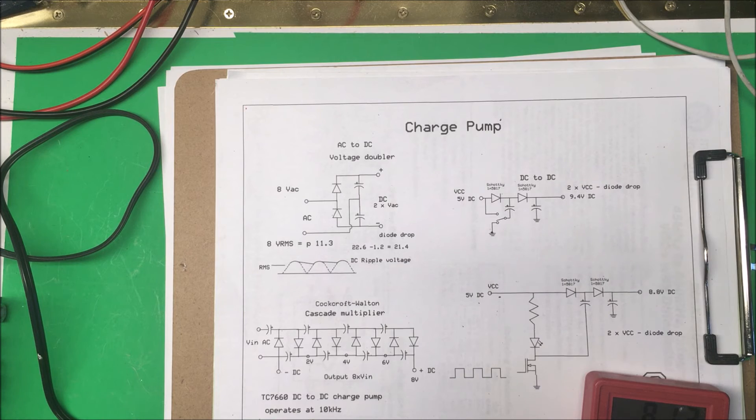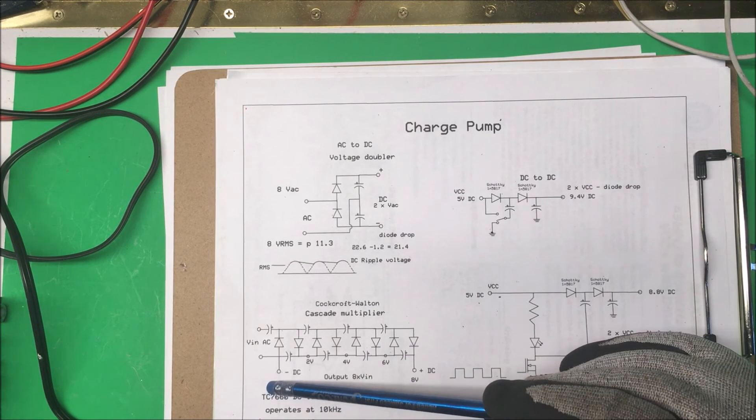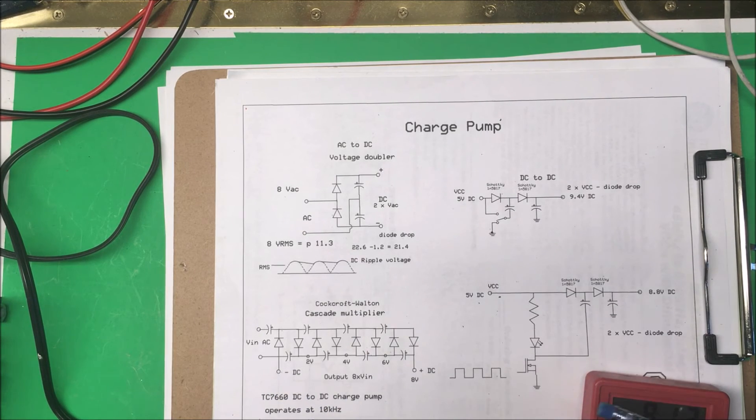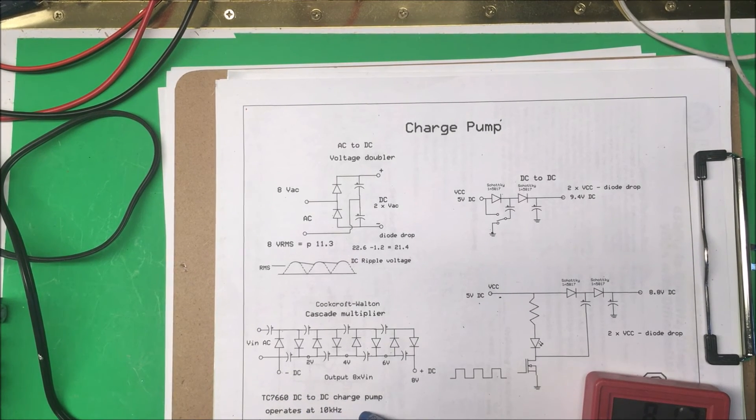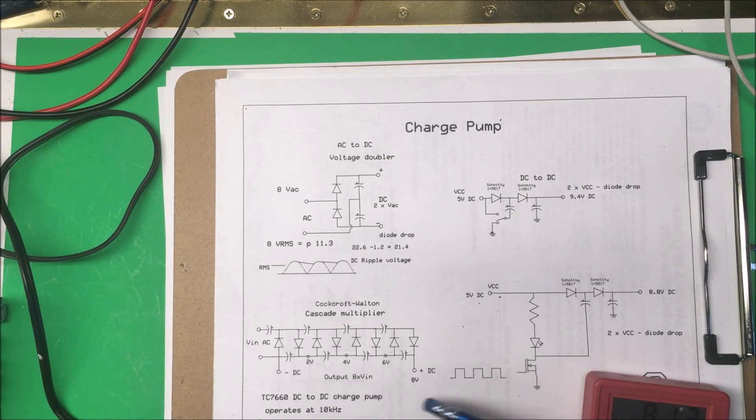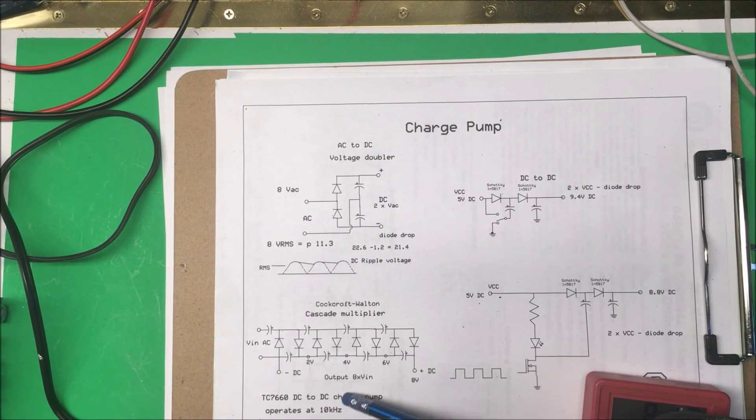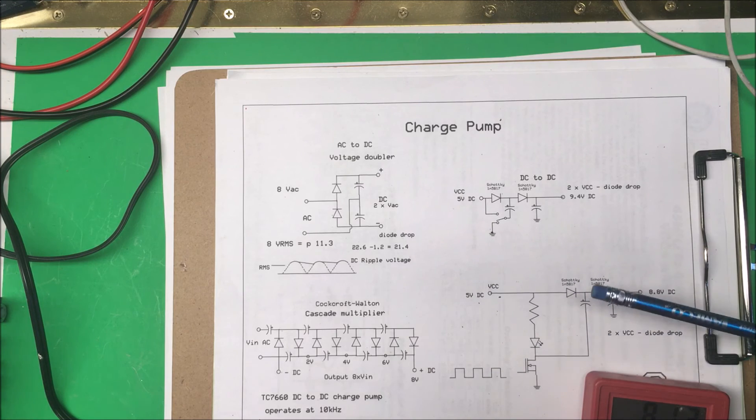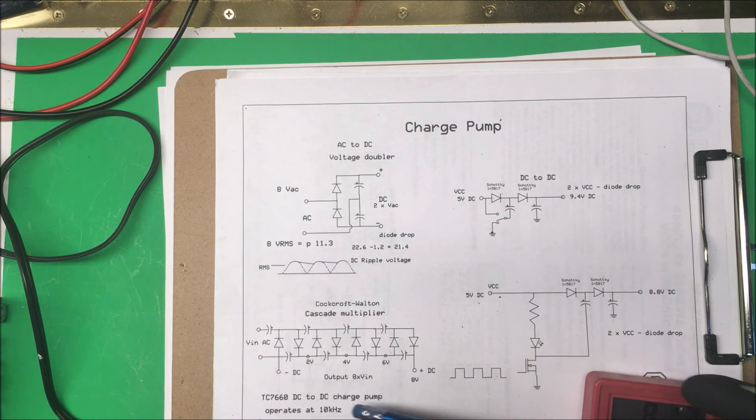Just buy a little IC chip. The ones I bought were a TC 76600 there, and they're a DC to DC charge pump. They operate at 10 kilohertz and very simple little device to use. You just add a couple capacitors on the outside of that and it does all the switching for you. So that's the way to go if you need a charge pump.